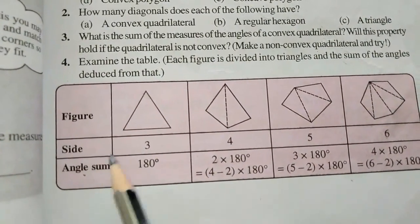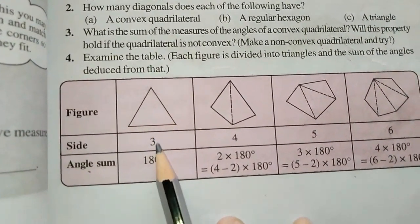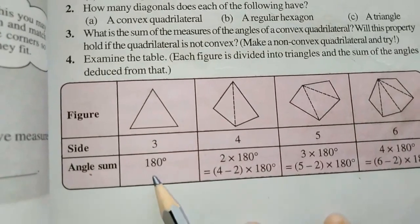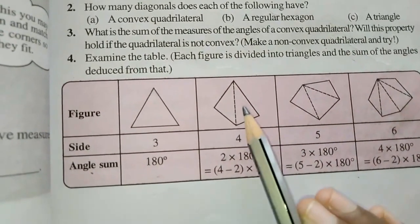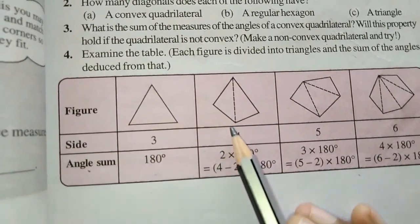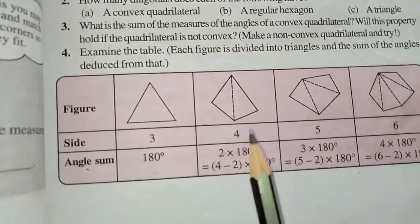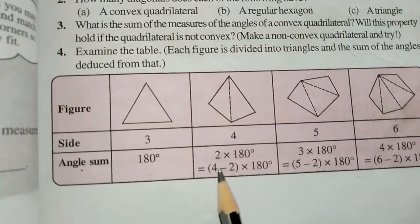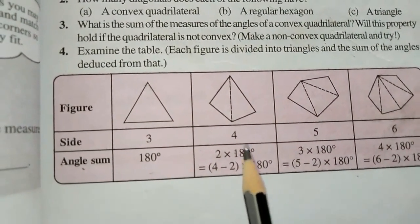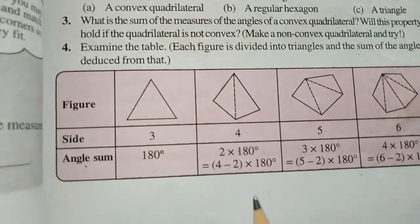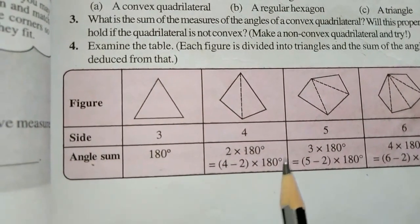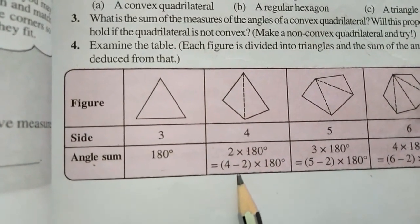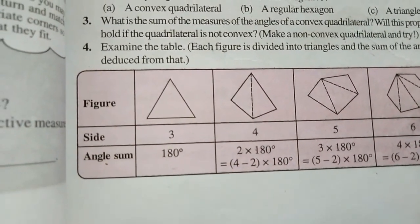See here — first figure, this triangle. This side has 3 sides, so the triangle angle sum is 180 degrees. That is, 2 into 180. How do you do that? 4 sides — 4 sides means 2 into 180.